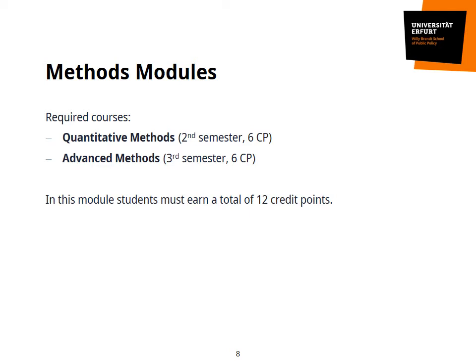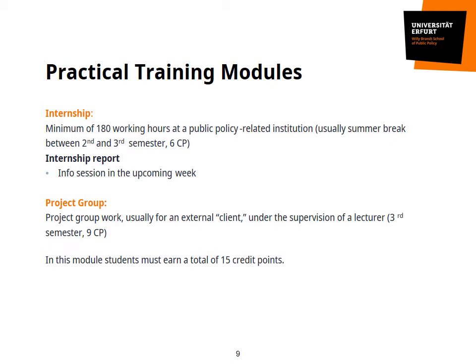As a practice-oriented program, the two practical training modules take center stage in the Master of Public Policy. One module will entail your internship. The internship counts for six credit points, which — when you multiply it by 30 hours per credit point — means 180 hours of workload. That workload includes the internship report, which you will need to submit so that your internship gets accredited. The internship shall typically take place in the semester break between your second and third semester, so for you in August and September 2021. You may decide to go for a longer internship or one at a different point of time; however, that requires extra planning. There will be an extra session on your internship next week, hosted by Florian Heinze as your internship coordinator.